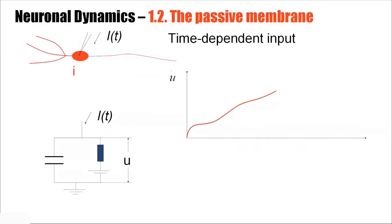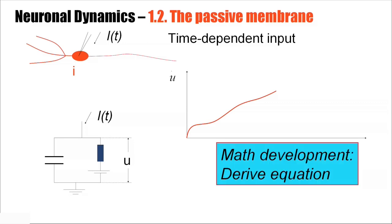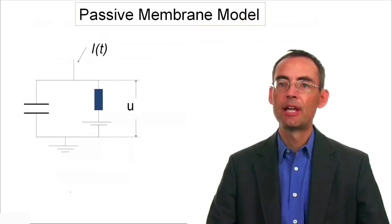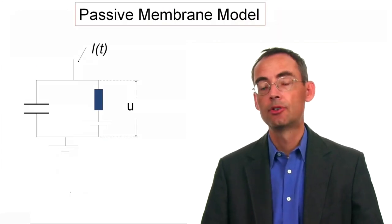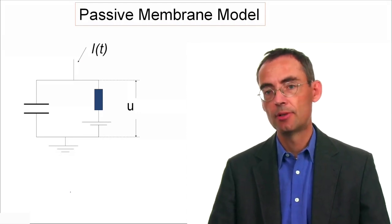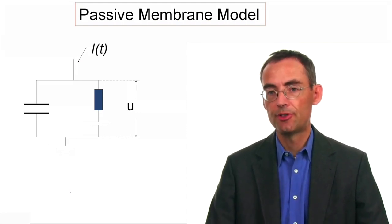So far for pulse input, but we can also study this RC circuit for arbitrary time-dependent input, which will cause some kind of voltage response. The question then is, are we able to predict the voltage response for any arbitrary time-dependent input? And the answer is yes, because the RC circuit can be described mathematically by a linear differential equation, which I will derive now. Let's look at our RC circuit and derive a mathematical equation to describe the properties of this circuit.